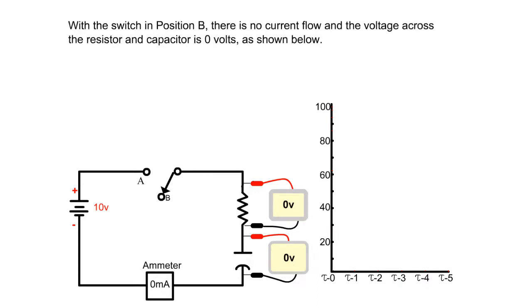With the switch in position B, there is no current flow and the voltage across the resistor and capacitor is zero volts, as shown below.